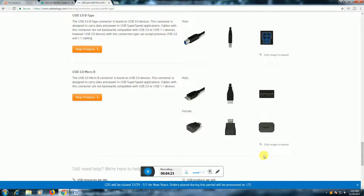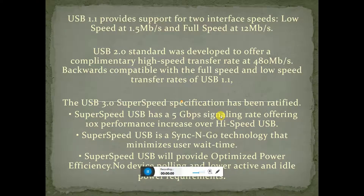USB 1.1 provides support for two interface speeds: low speed at 1.5 Mbps for data transfer, and full speed at 12 Mbps. The USB 2.0 port standard was developed offering high-speed data transfer at 480 Mbps, with backward compatibility with full speed and low speed transfer ratings of USB 1.1.